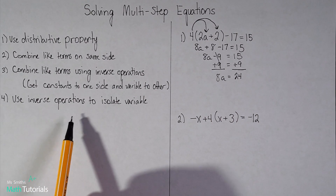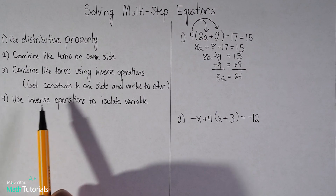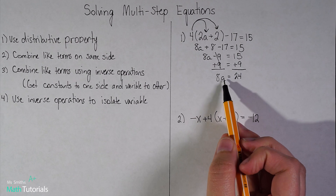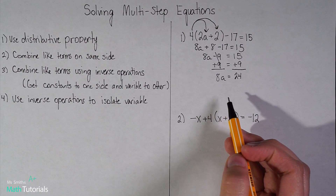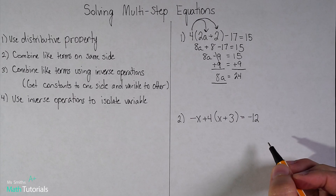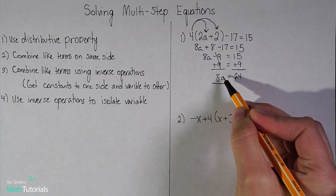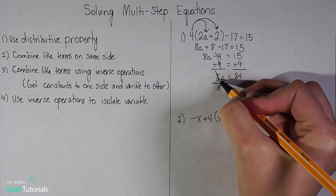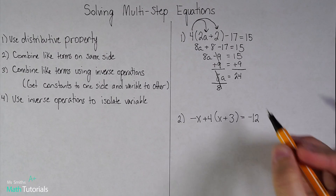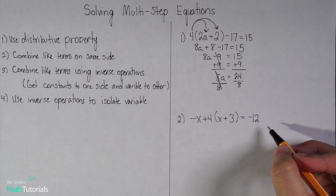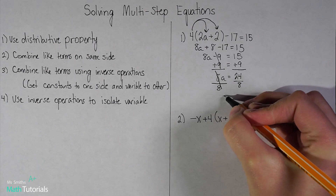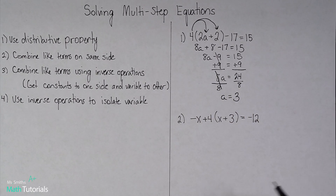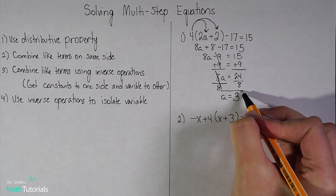Moving on to the next step: use inverse operations to isolate the variable. The variable's got that 8 with it — this means 8 times a. The inverse of multiplication is division, so I need to divide by 8. Those two cancel out to 1, but what I do to one side I have to do to the other as well. So a equals 24 divided by 8, which is 3. I was able to solve this multi-step equation all the way down — I now know that a equals 3.